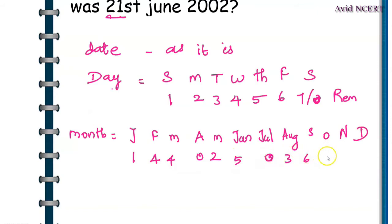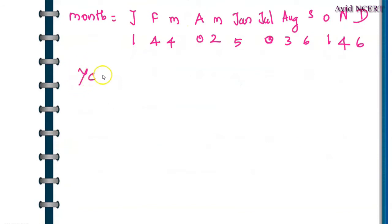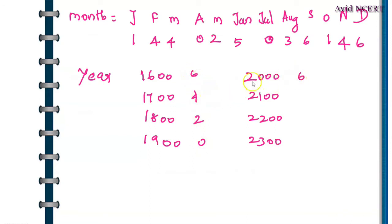The code for years starts from 1600, 1700, 1800, 1900, and then 2000, 2100, 2200, 2300. The codes are: 6, 4, 2, 0, and then the same thing repeats: 6, 4, 2, 0. To solve these types of problems, it is important to remember these codes.